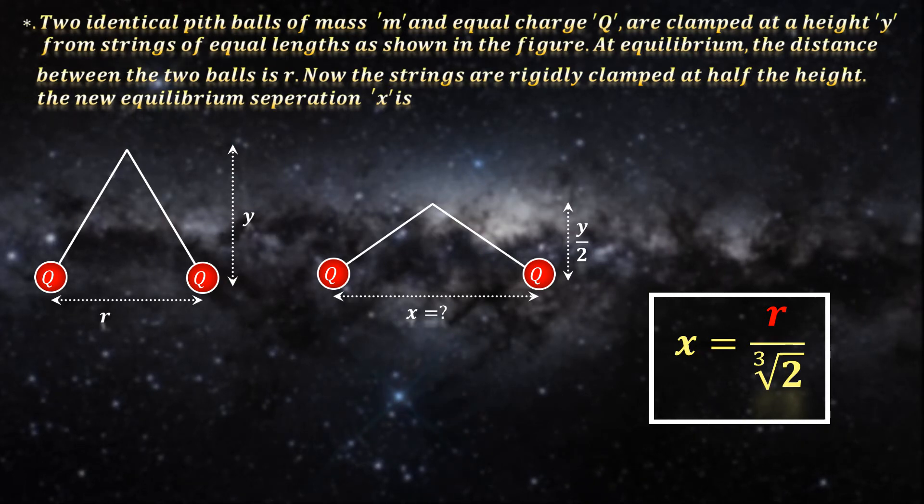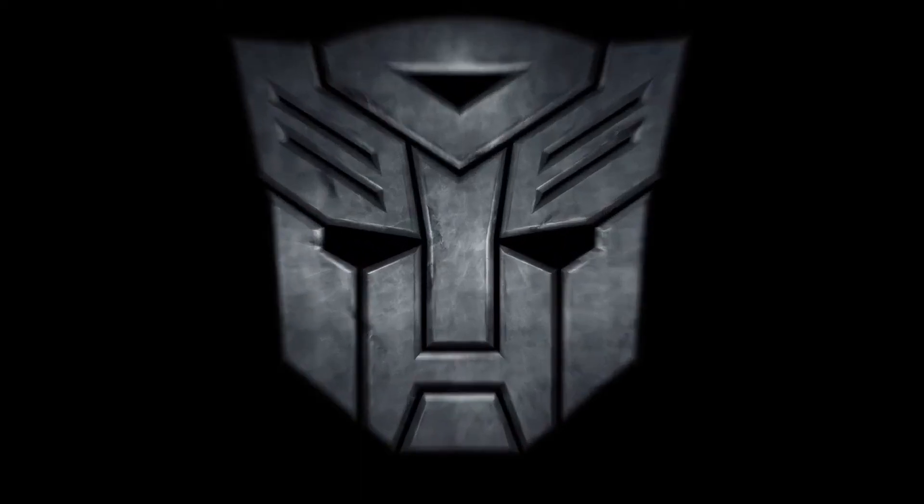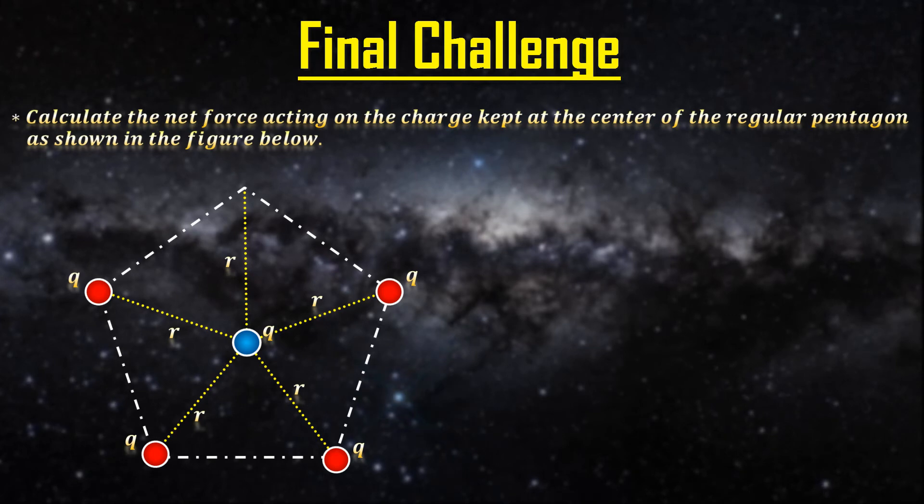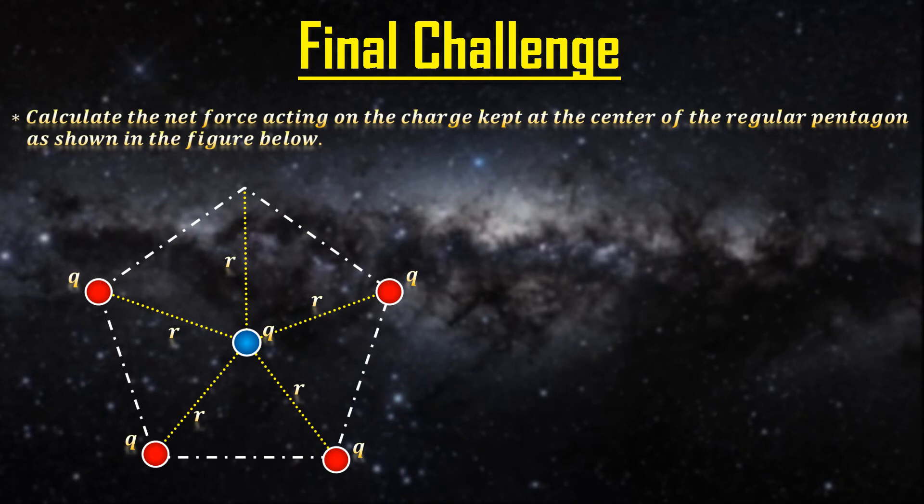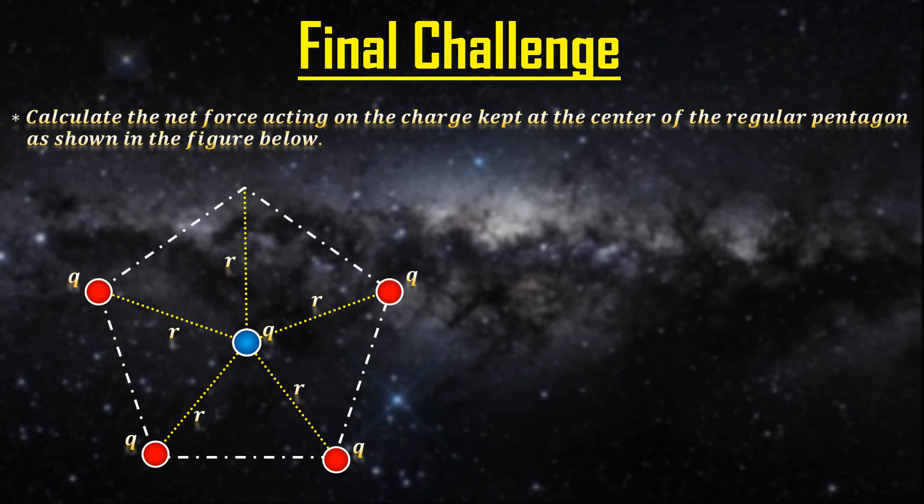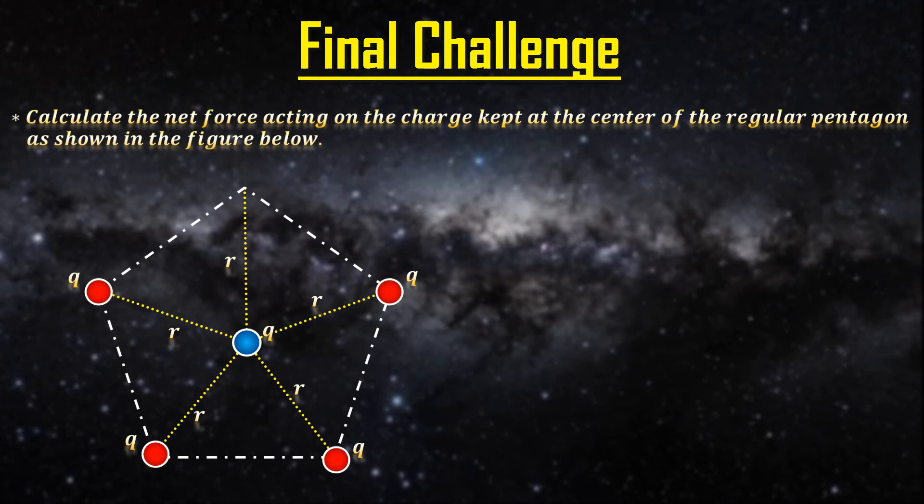Alright, one final challenge question. Here goes. As you can see, 4 charges are kept at 4 corners of a regular pentagon. You have to calculate the force acting on an identical charge kept at the center. What do you think makes this challenging?